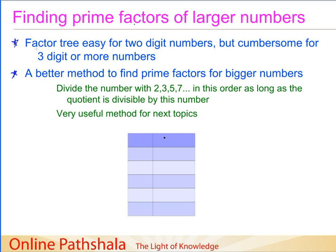Let us say we have the number 980, and we want to find out the prime factors for this number. We first take the smallest prime number, which is 2, and then we divide 980 by 2, which gives us 490.